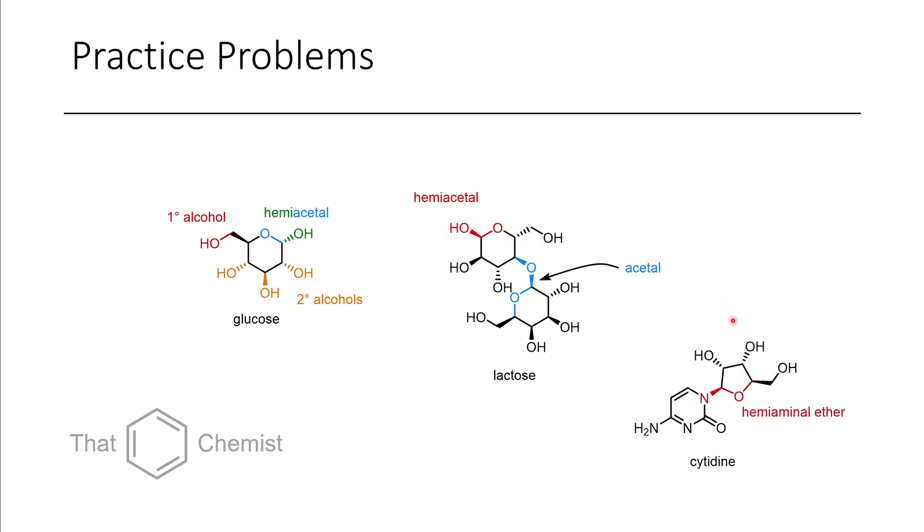If we look at the nucleotide here, cytidine, we have a hemiaminal ether because there's an OR, some R group coming off, as well as an N with something connected to it, as well as a CH. But in the case of aminals, we don't distinguish between acetals and ketal derivatives. Just all of them are considered aminals.